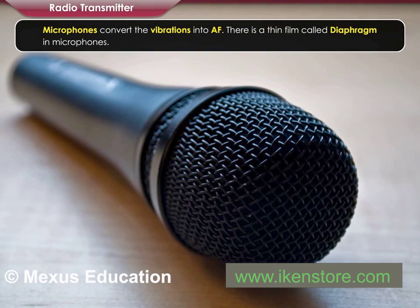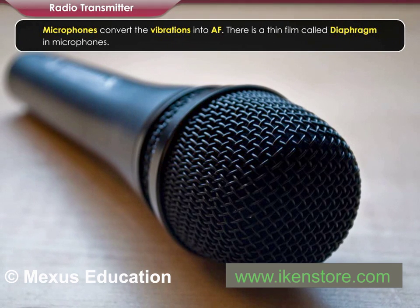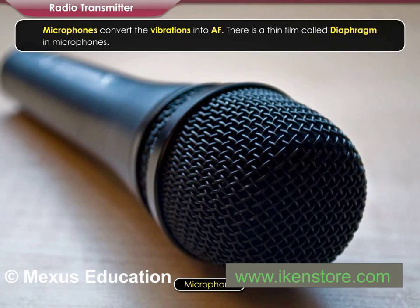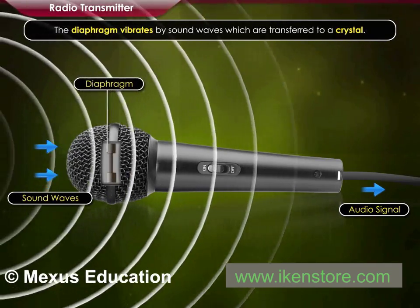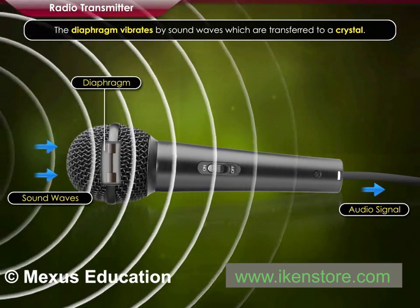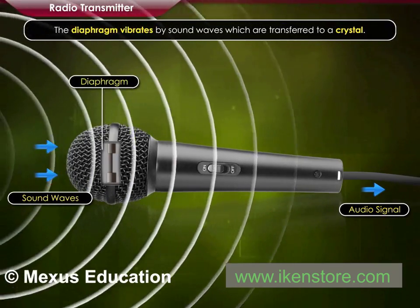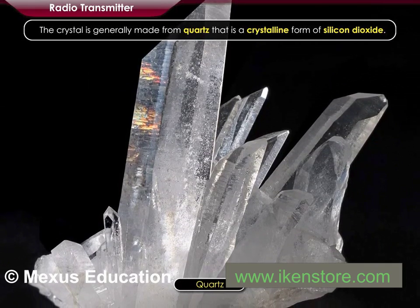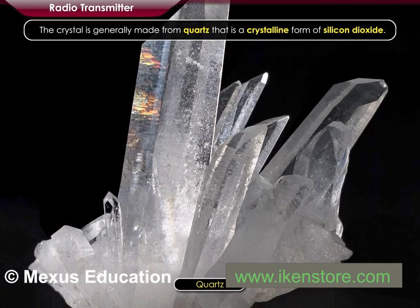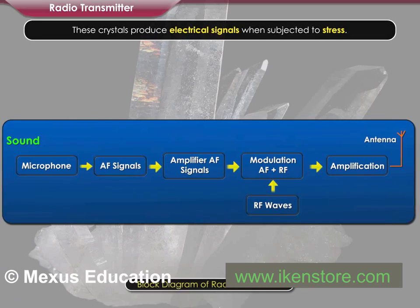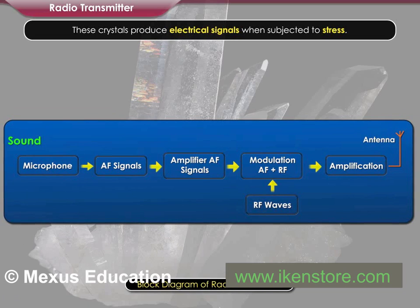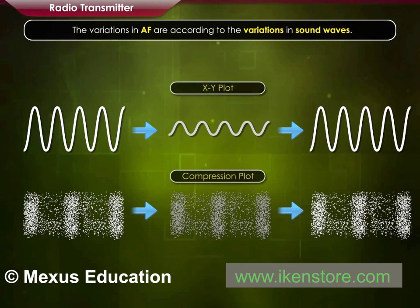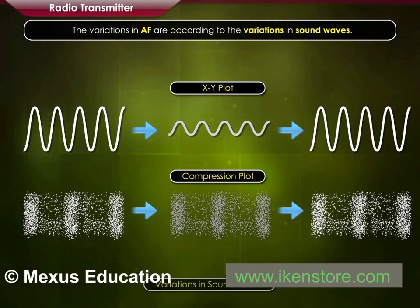Microphones convert the vibrations into AF. There is a thin film called a diaphragm in microphones. The diaphragm vibrates due to sound waves, which are transferred to a crystal. The crystal is generally made from quartz, a crystalline form of silicon dioxide. These crystals produce electrical signals when subjected to stress. The variations in AF are according to the variations in sound waves.